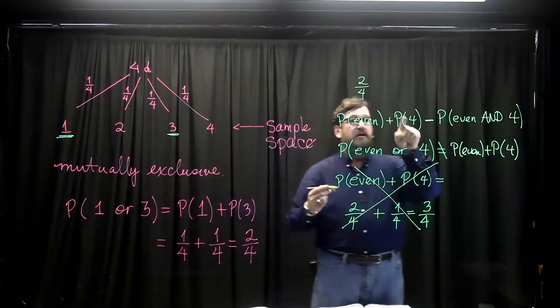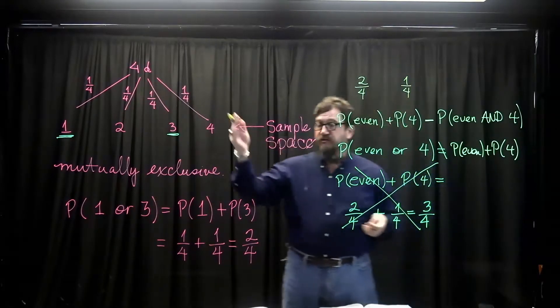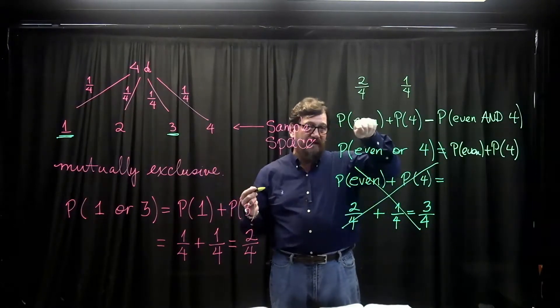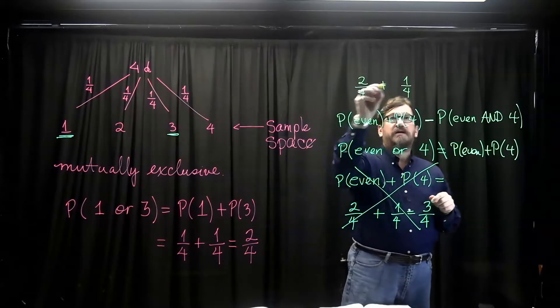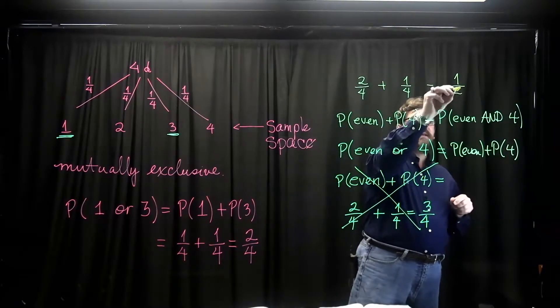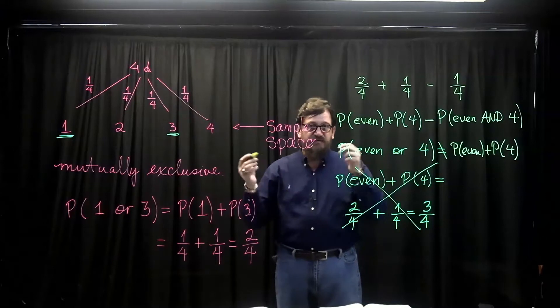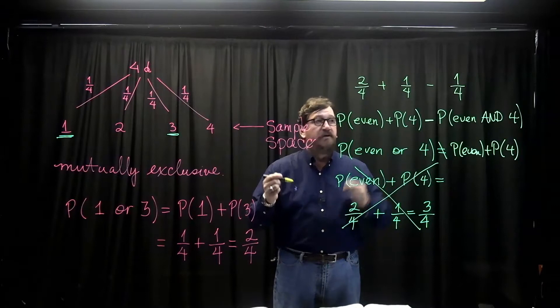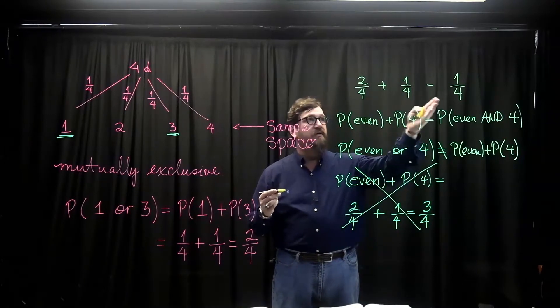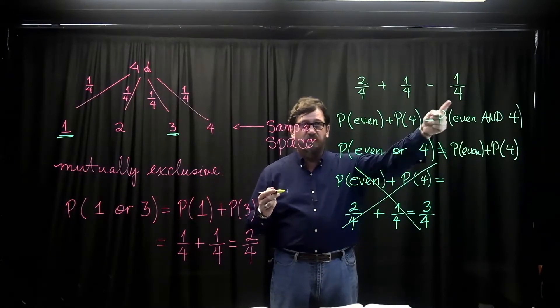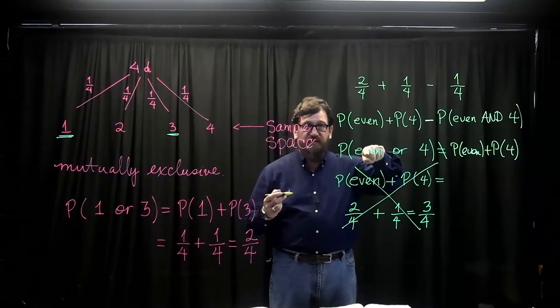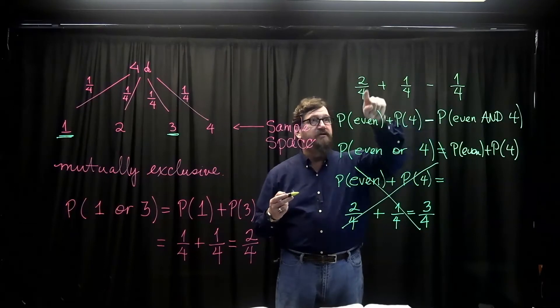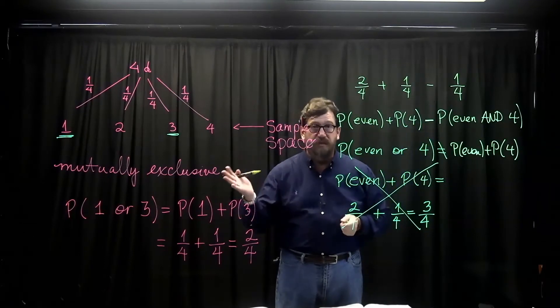So even gives us two out of four because it counts the two and the four from the set over here. We get one out of four because there's one four out of all of the outcomes. But the four was counted over here already. So we're going to subtract anything that is four and even, which happens to be just the four in this case. Therefore, if we do this arithmetic, we see the probability of tossing an even number or a four is exactly going to be two fourths, which makes sense.